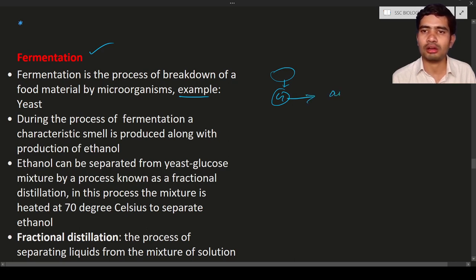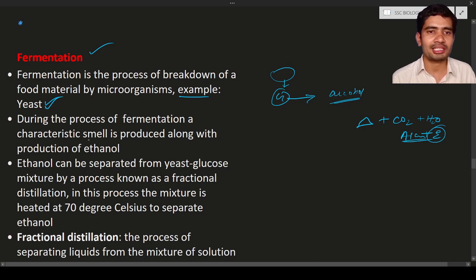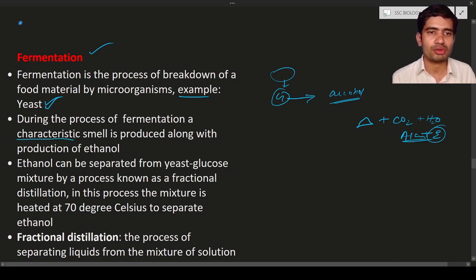Yeast, for example, is going to break down glucose into alcohol. In the last experiment we also saw that glucose is converted into heat energy, carbon dioxide, water, and alcohol. A number of microorganisms carry out fermentation. Depending upon the fermentation, a characteristic smell is produced along with the production of ethanol. Different compounds produced also have different characteristic smells.